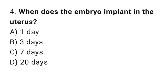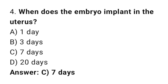Question 4: When does the embryo implant in the uterus? The right answer is C, 7 days. Implantation happens around day 6 to 10 after fertilization.